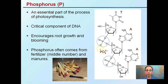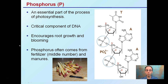Phosphorus is an essential part of photosynthesis and a critical component of DNA, seen here in that sugar backbone. It encourages root growth and blooming — if you see a bloom fertilizer, it'll typically have elevated levels of phosphorus. It's the middle number on a fertilizer bag and is also present in manures. If you over-add manures, while they're a great organic source of nutrients, you can often over-add phosphorus. The matchstick shown here contains phosphorus in the strike area.